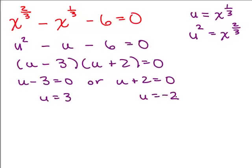The trick is to realize you are not done. That tells you what u is equal to, but the original problem had an x, and what we're looking for are the solutions for x. So we have to go back to our original value of u. Since u is x to the 1/3, instead of writing u we write x to the 1/3 — or the cube root of x. So we now do a back substitution, substituting in what u really stands for: the cube root of x.